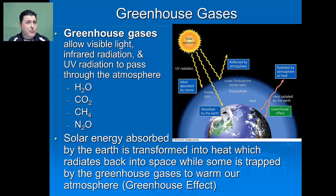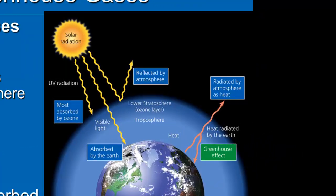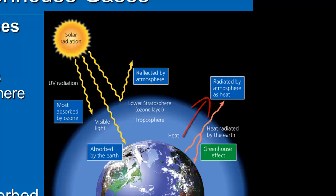Another thing that influences climate is greenhouse gases. Greenhouse gases allow light, infrared radiation, and ultraviolet radiation to pass through the atmosphere. They include things like water vapor, carbon dioxide, methane, and nitrous oxide. The solar energy is then absorbed by the Earth and transformed into heat, which radiates back out into space. Some of that heat is actually trapped by those greenhouse gases, which allows our planet's atmosphere to remain warm. This is referred to as the greenhouse effect.